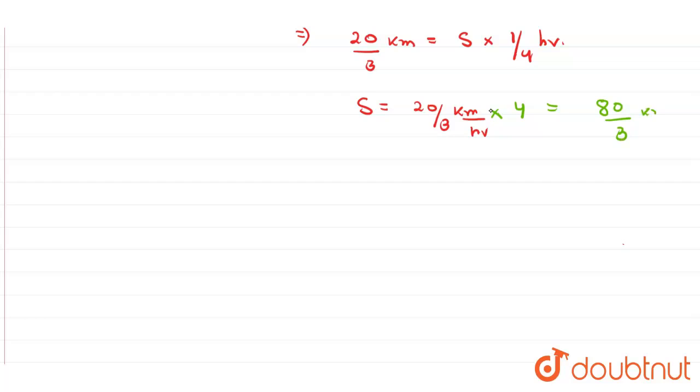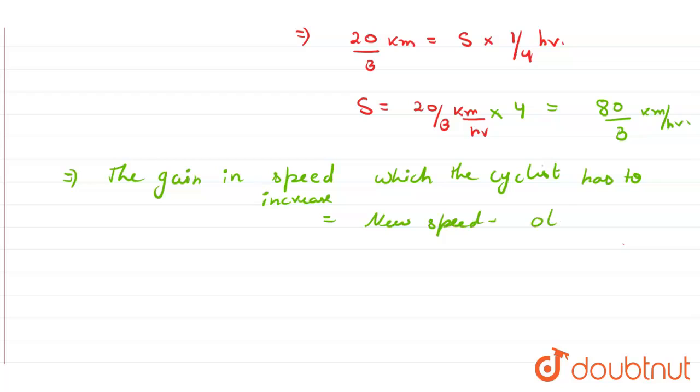divided by 3 kilometers per hour. Now if we want to find the gain in speed which the cyclist has to increase, it is new speed minus old speed.